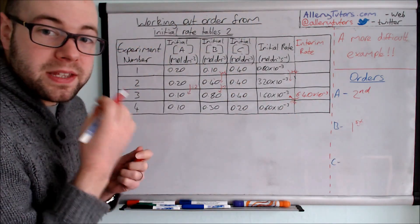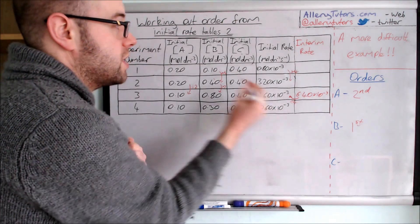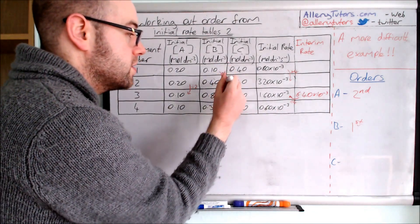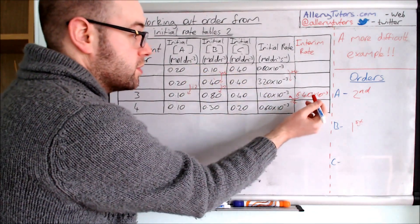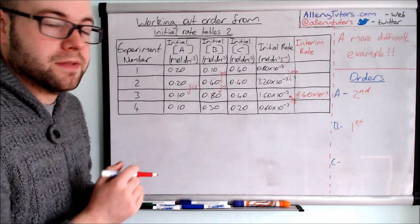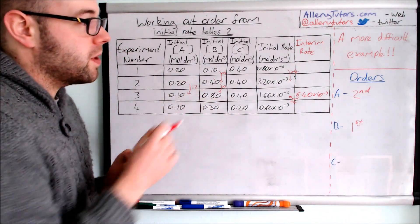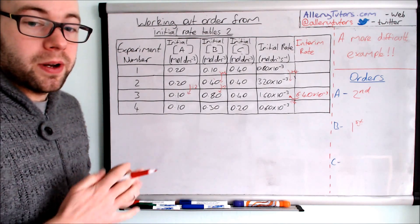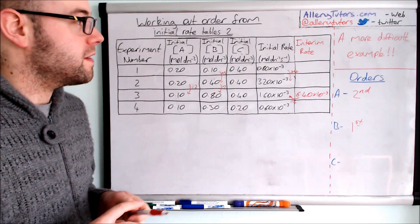This is where this interim rate is. The interim rate just tells us the effect of one of the reagents, but then we use that number to work out the effect of just A. Effectively we're taking out that factor for B. And then the last one we have to work out is the effect of C.